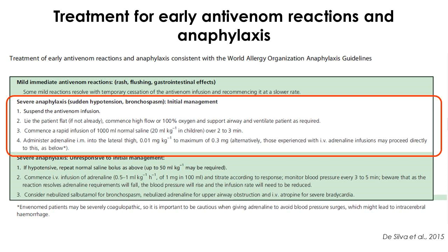Consider nebulization with salbutamol for bronchospasm. If severe upper airway obstruction occurs, nebulize with adrenaline. In severe bradycardia, intravenous atropine is helpful. There is no place for promethazine, hydrocortisone, or any other corticosteroids during the management of antivenom reactions.